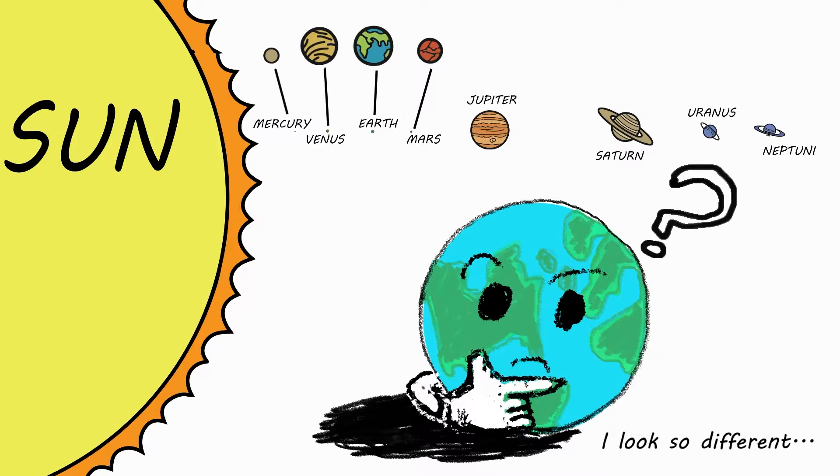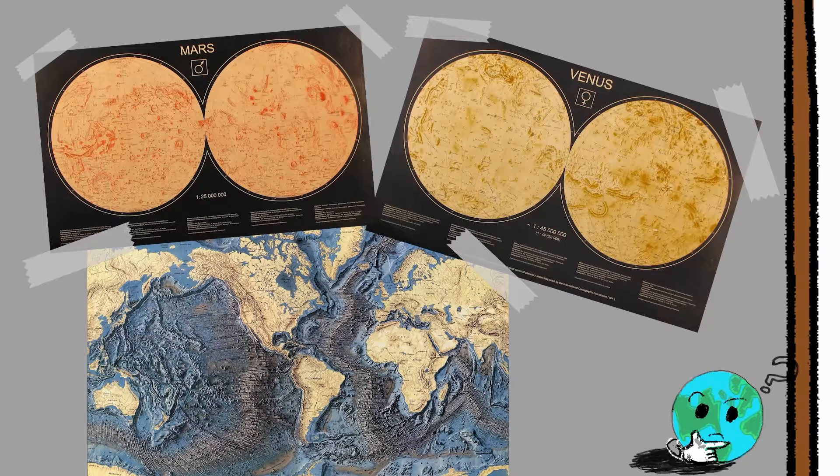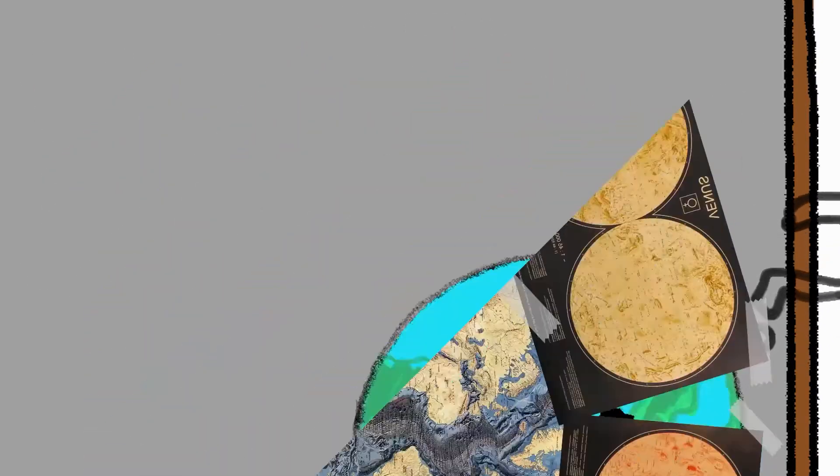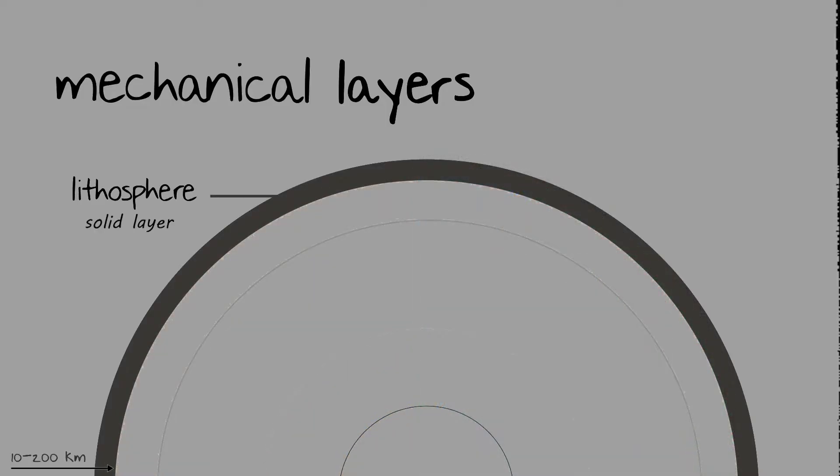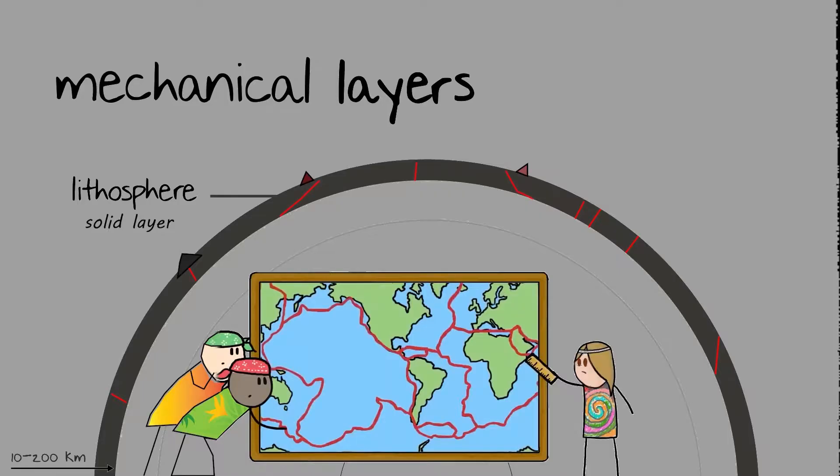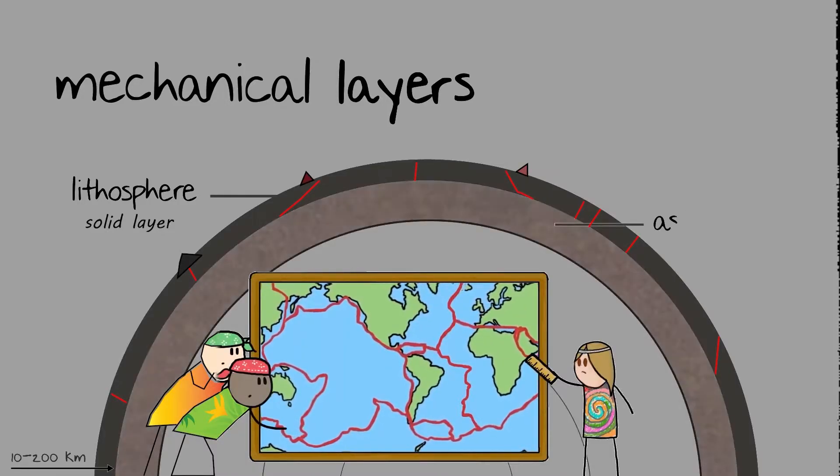So why would these planets look so different from Earth? One big reason is that, unlike other planets with a one-piece rocky surface, Earth's outermost solid layer, what we call the lithosphere, is divided into many rigid plates that move independently on a hot, weak asthenosphere.